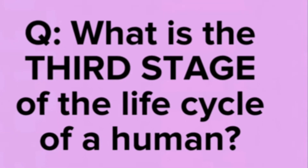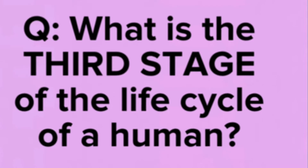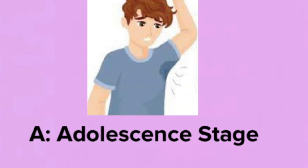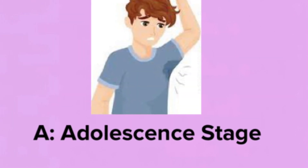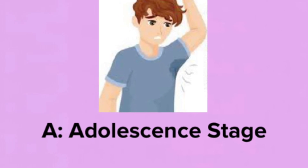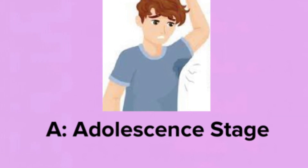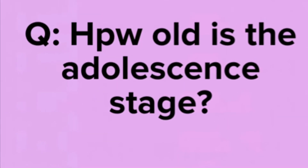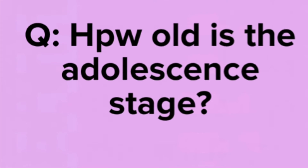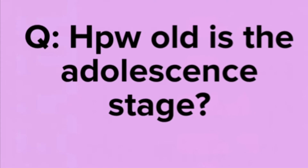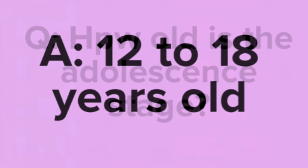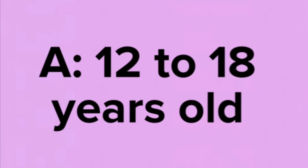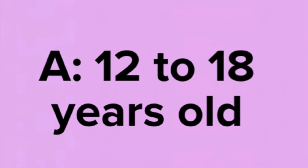What is the third stage of the life cycle of a human? The answer is the adolescent stage. How old is the adolescent stage? The answer is 12 to 18 years old.